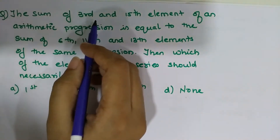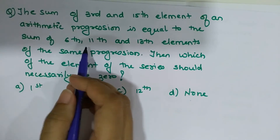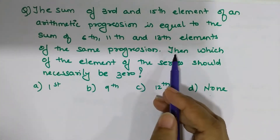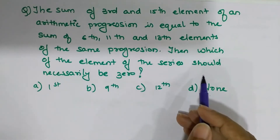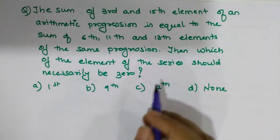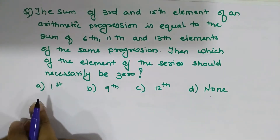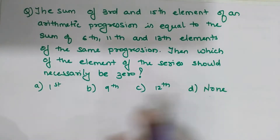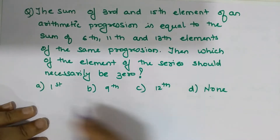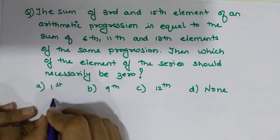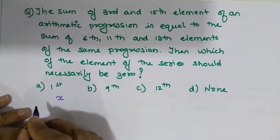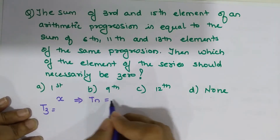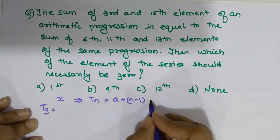The first question: the sum of the third and the fifteenth element of an arithmetic progression is equal to the sum of the sixth, eleventh, and the thirteenth elements of the same progression. Which element of the series must necessarily be zero? When you look at the options there is an option of 'none', which makes things tricky. Let's say the first term is x, and the formula for the nth term is: Tn = a + (n−1)d.